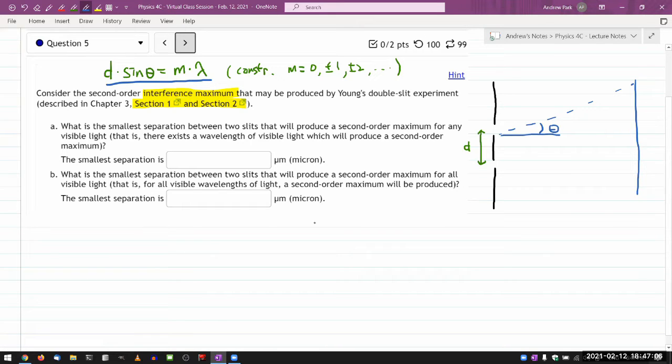So it says consider second order. I think it means m equals two, because m equals zero, that's just right at the center, so I don't think it counts as an order at all. And when you look at the intensity pattern here, it should be minimum and then maximum, minimum, maximum. So this would be m equals one, and this would be m equals two. So we have fixed the one value in this expression here that may be produced by Young's double slit experiment.